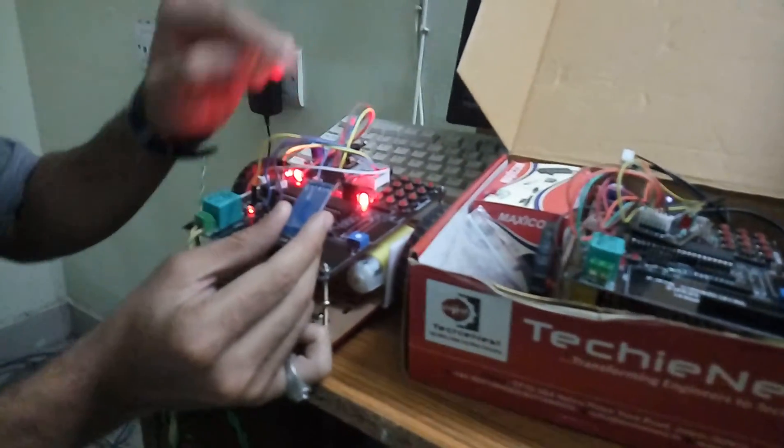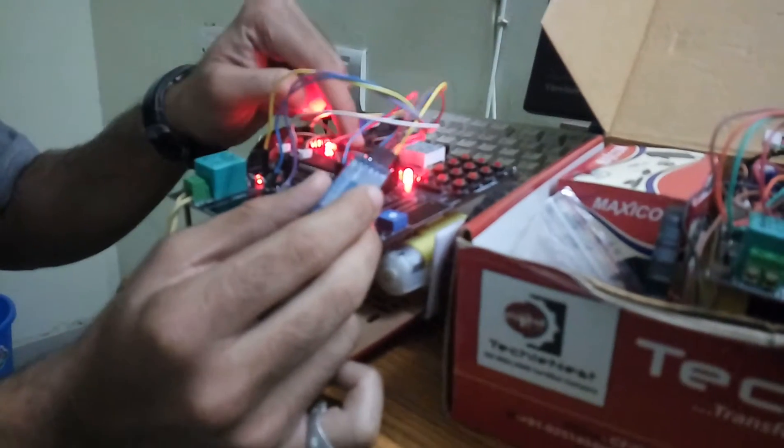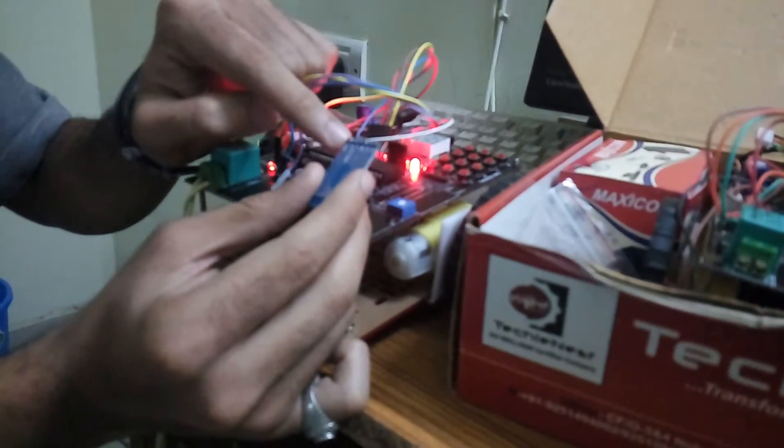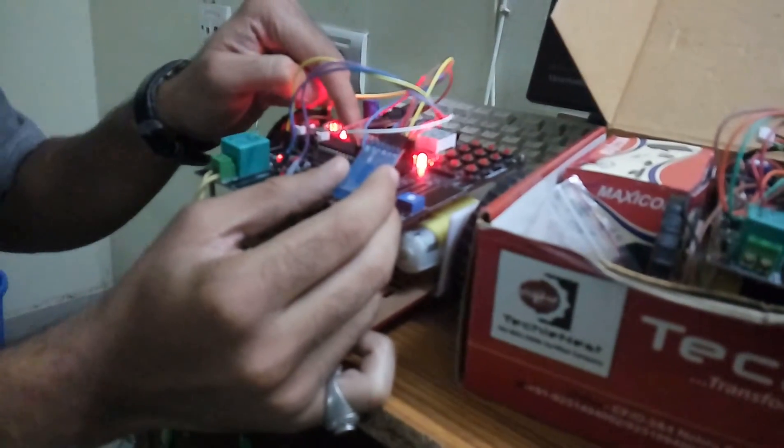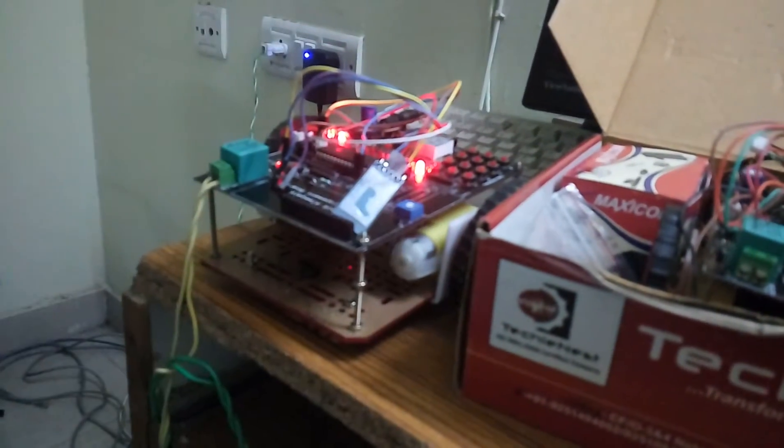The transmitter pin of this Bluetooth device is connected to the receiver pin of the microcontroller and the receiver pin of this Bluetooth device is connected to the transmitter of this microcontroller. This is our Bluetooth device.